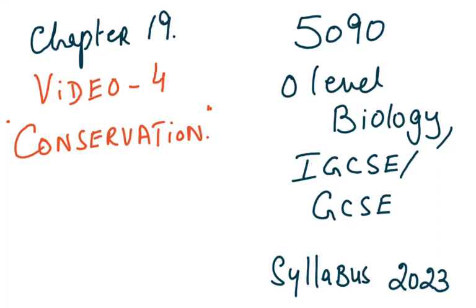Bismillah ar-Rahman ar-Rahim. We come to the last chapter and the last video. This is chapter 19, video number 4, which is on conservation. This is 5090 O-Level Biology IGCSE, and this is for the new syllabus which is going to be examined in the year 2023.